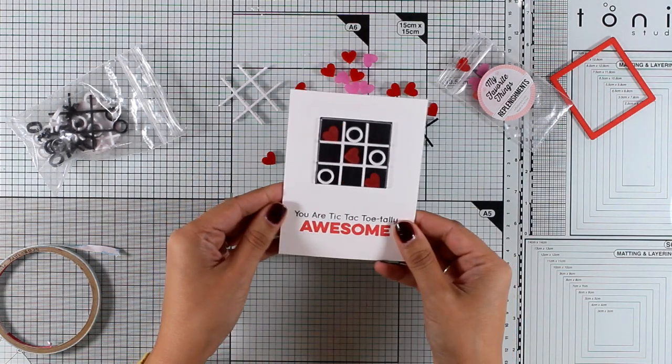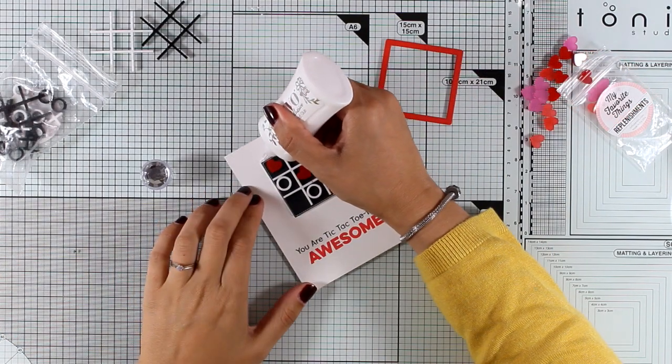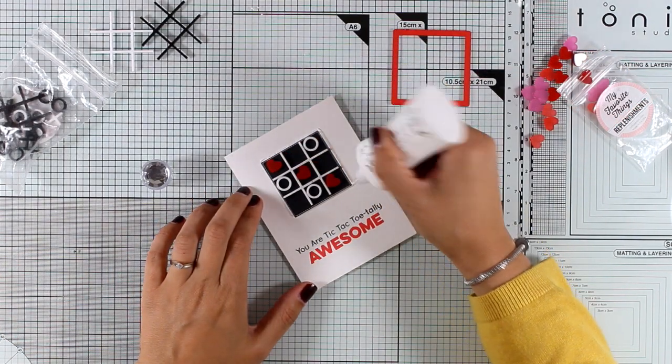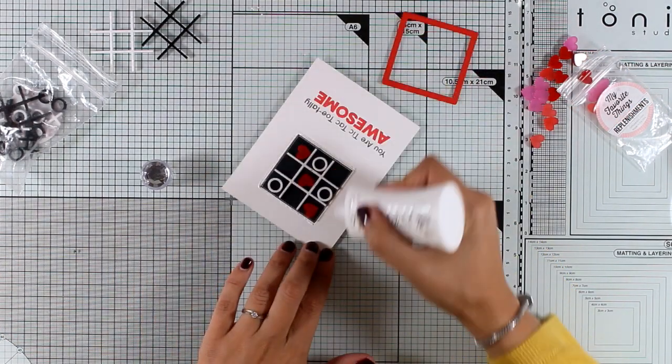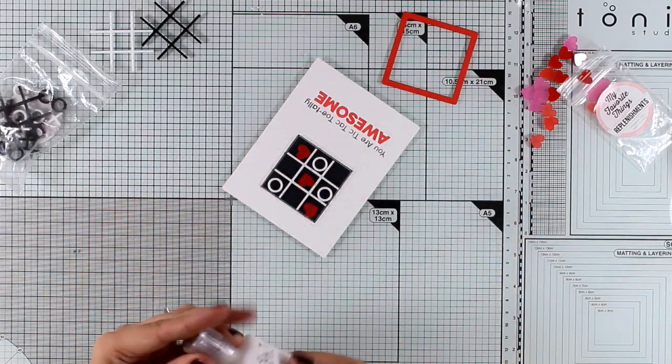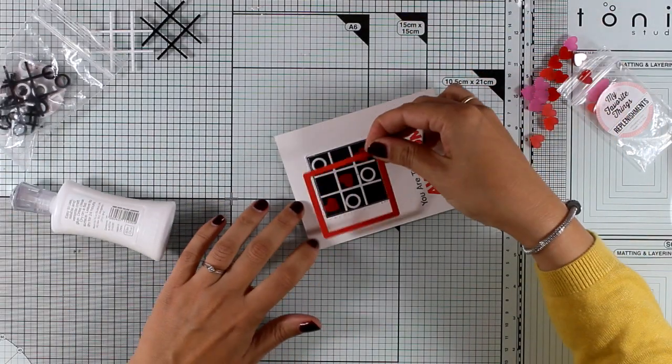Now you can leave the front of your window as it is. It looks beautiful as it is. But I decided to use the frame. So I'm going to add it in red just because I think it makes it look more finished.